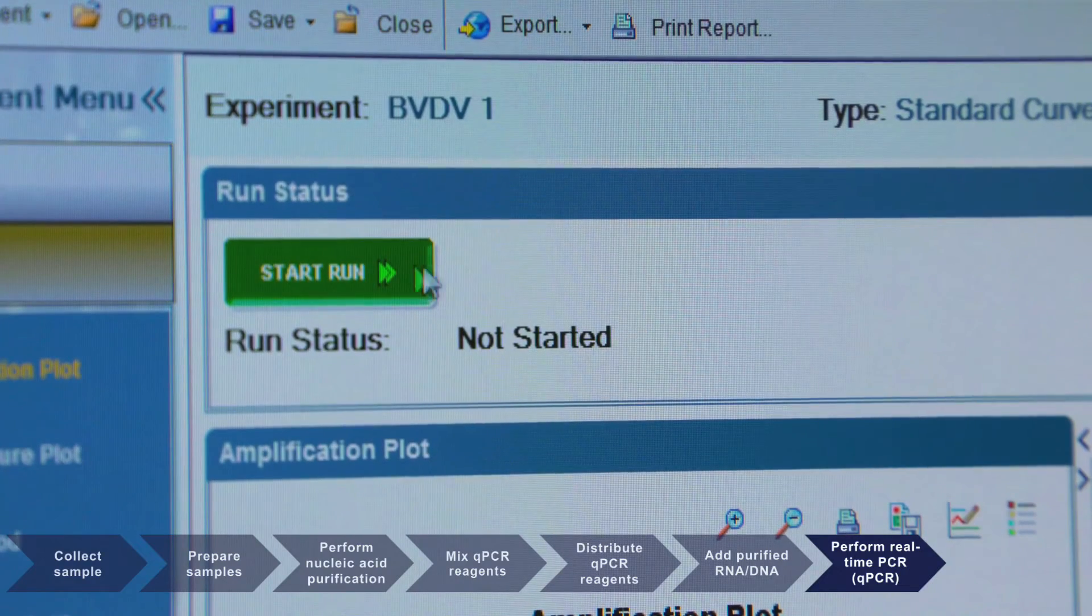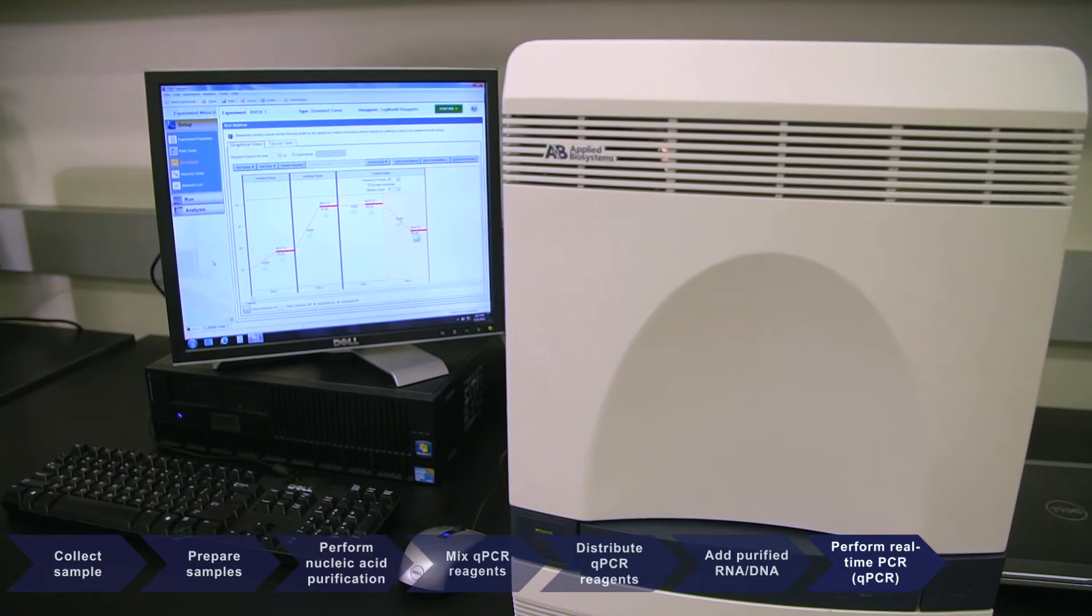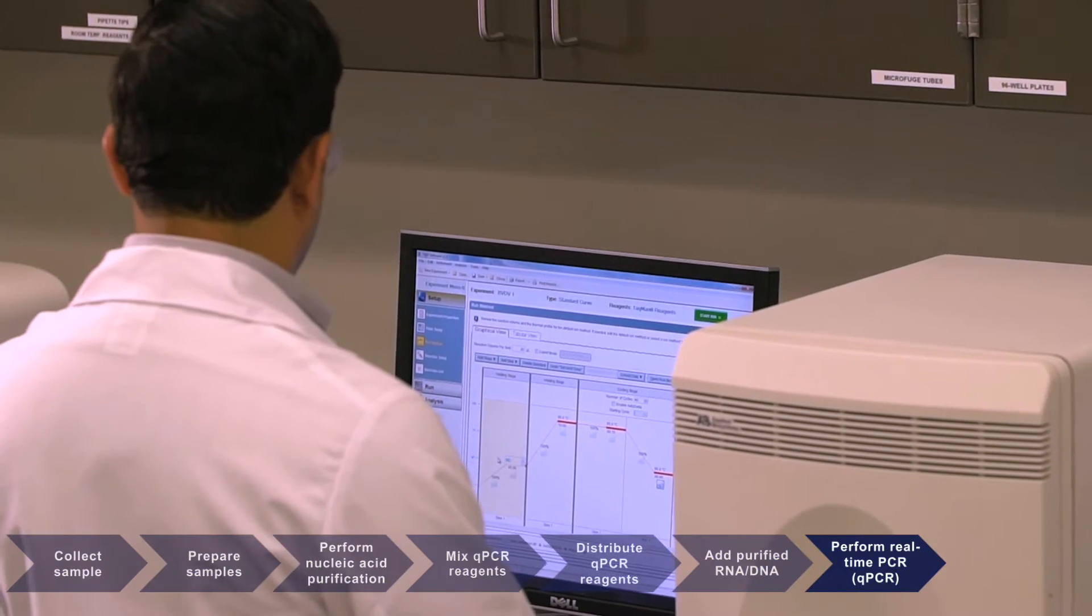As the PCR run proceeds through the program, an amplification plot is generated, determining the normalized fluorescence with each cycle.